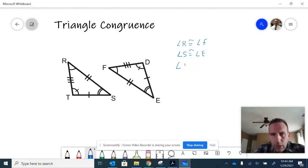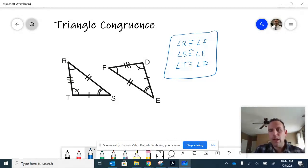And lastly, that angle T is congruent to angle D. That's the three angles. But for a triangle to be completely congruent, not only the three angles have to be congruent, we also have to have congruence on the three sides.